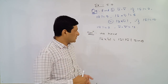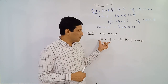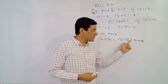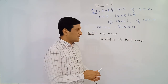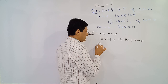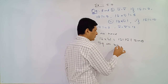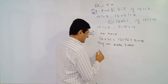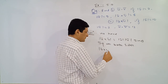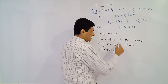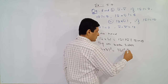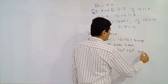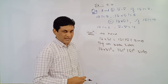We already know that magnitude of u-bar cross v-bar is defined as magnitude of u-bar into magnitude of v-bar into sine theta. Now squaring both sides: the left side gives the square of the magnitude of u-bar cross v-bar, and the right side gives square of magnitude of u-bar, square of magnitude of v-bar, and sine squared theta.